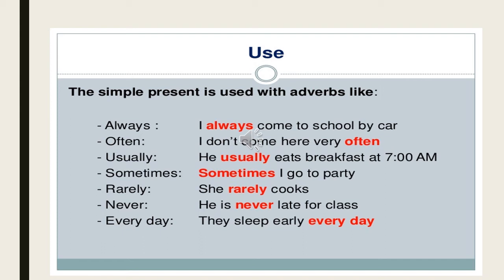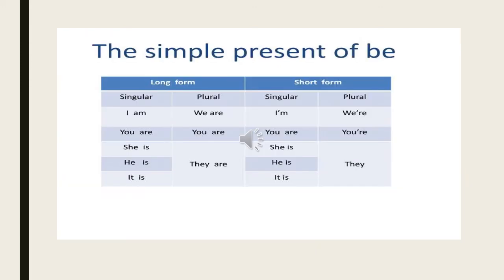More examples: she rarely cooks; he is never late to class; they sleep early every day. For subject-verb agreement in simple present tense: 'I' takes 'am'; 'you,' though singular, always takes the plural form of the verb — you are coming, you are going. 'He,' 'she,' 'it' takes 'is'; and for plurals, it is 'are.'